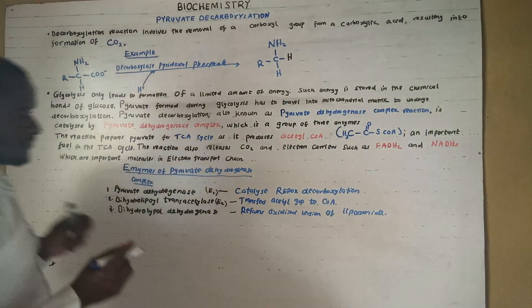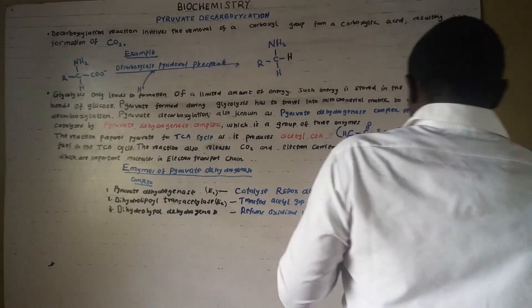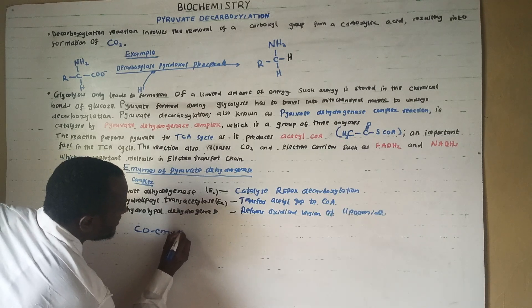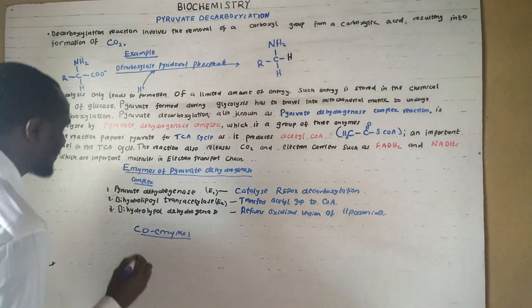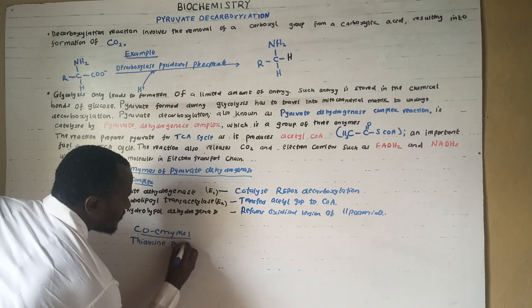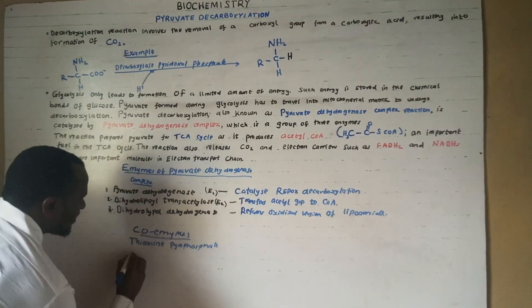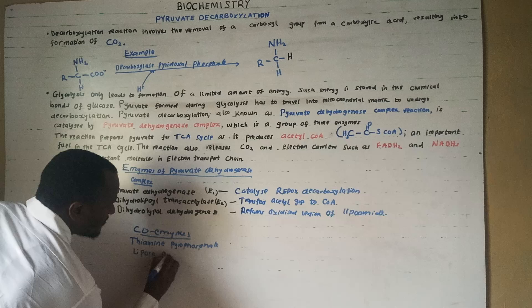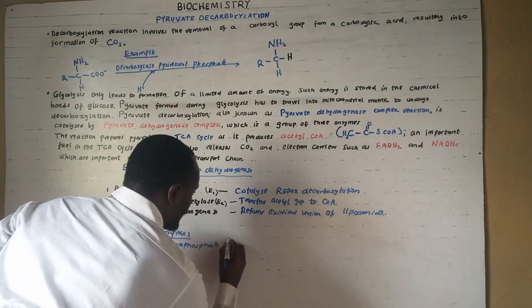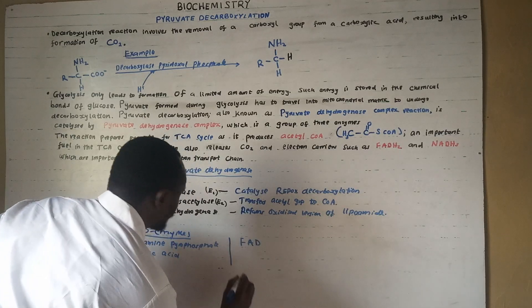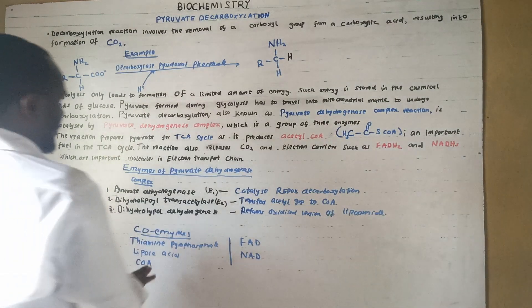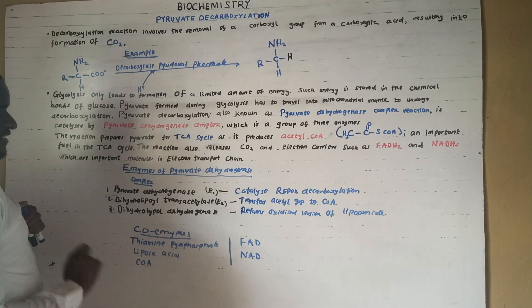Now let us look at the coenzymes involved in the pyruvate dehydrogenase complex. The core coenzymes are: thiamine pyrophosphate, lipoic acid, coenzyme A, FAD, and NAD⁺.